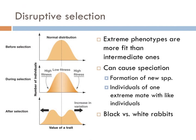In disruptive selection, the mean also doesn't change, but the variation increases. Extreme phenotypes in both directions are more fit than the intermediate ones, and this is thought to be a common cause of speciation, or the formation of new species. One example is black and white rabbits: black rabbits are better suited to hide amongst dark rocks to avoid predators, whereas white rabbits are better suited to avoid predators in a snowy environment. So the evolution of rabbit fur has selected for white or very dark fur, while organisms with intermediate gray fur are selected against. This is disruptive selection.